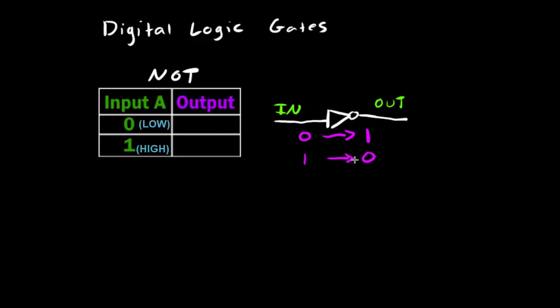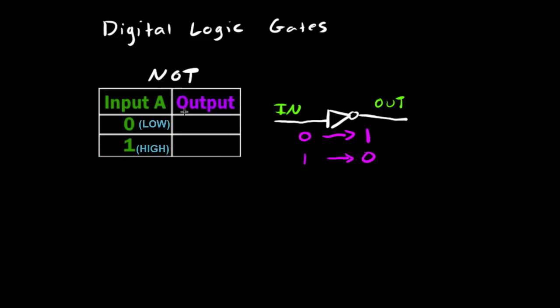And if we send in a one, it will spit out a zero. We can represent this with a truth table, which lists all of the possible inputs. In the case of a NOT gate it only has a single input, labeled A. If I pass in a zero I get out a one, and if I pass in a one I get out a zero. That is what a NOT digital logic gate does, and NOT gates are used almost everywhere in electronics.